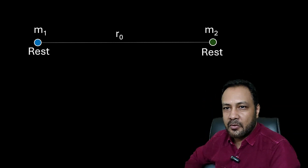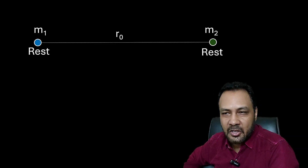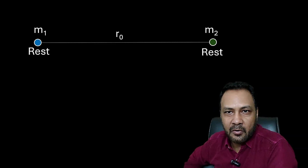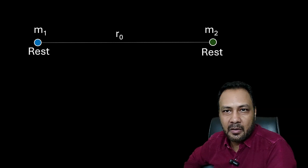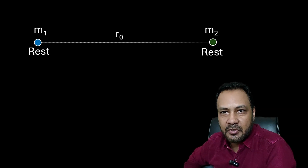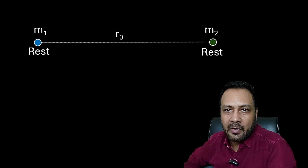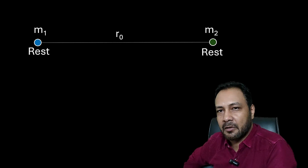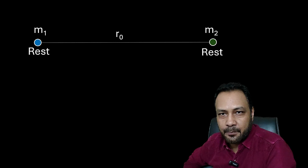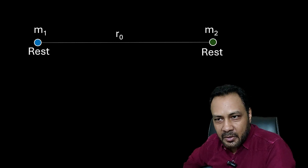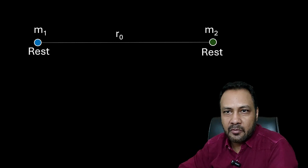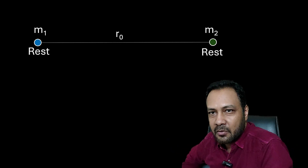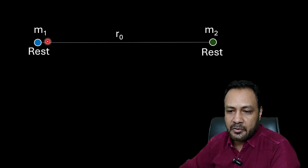One way is to write the acceleration at a general moment, then find velocity, and using relative velocity equal to dr/dt, find the time. But this involves complex integration. So here we'll use an elliptical technique using the concept involved in gravitational motion. It will take some time to understand, but once you understand it, it will just be a matter of a few seconds to get the answer.